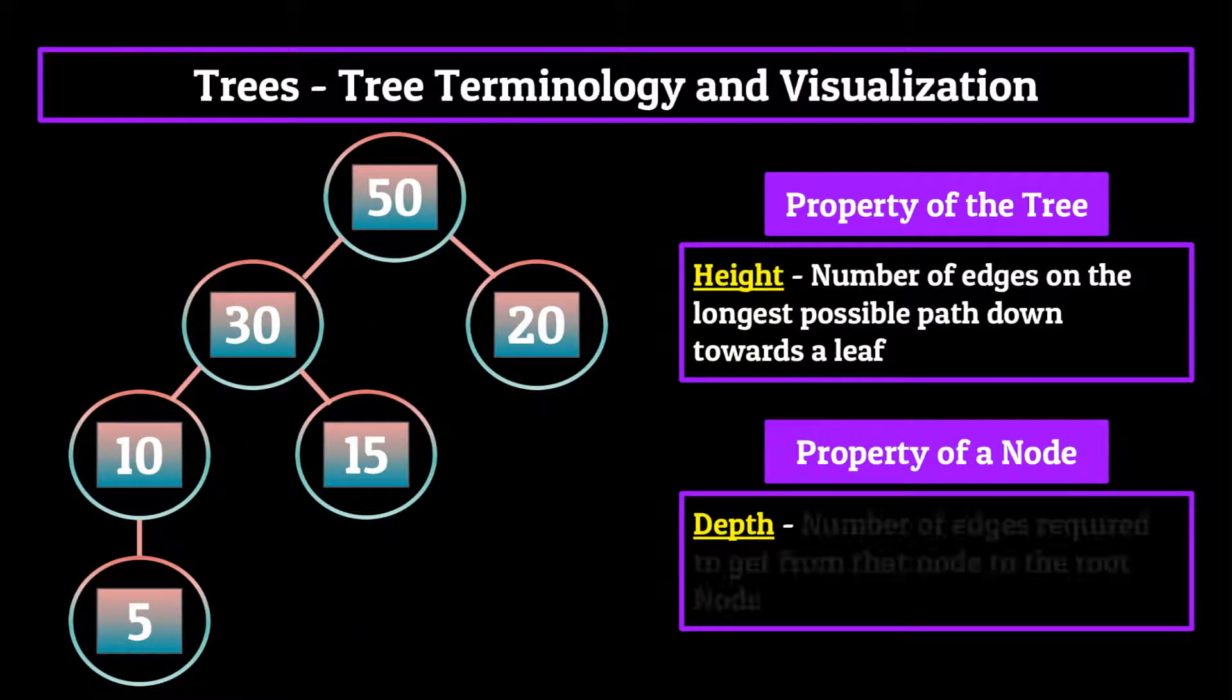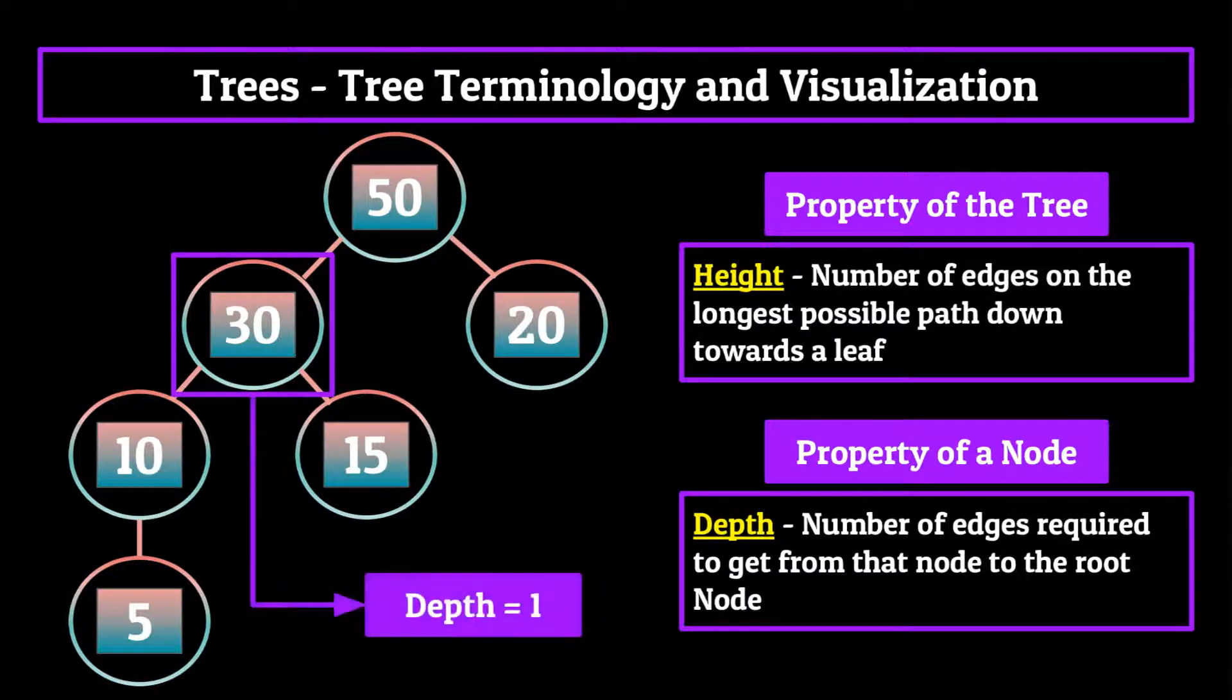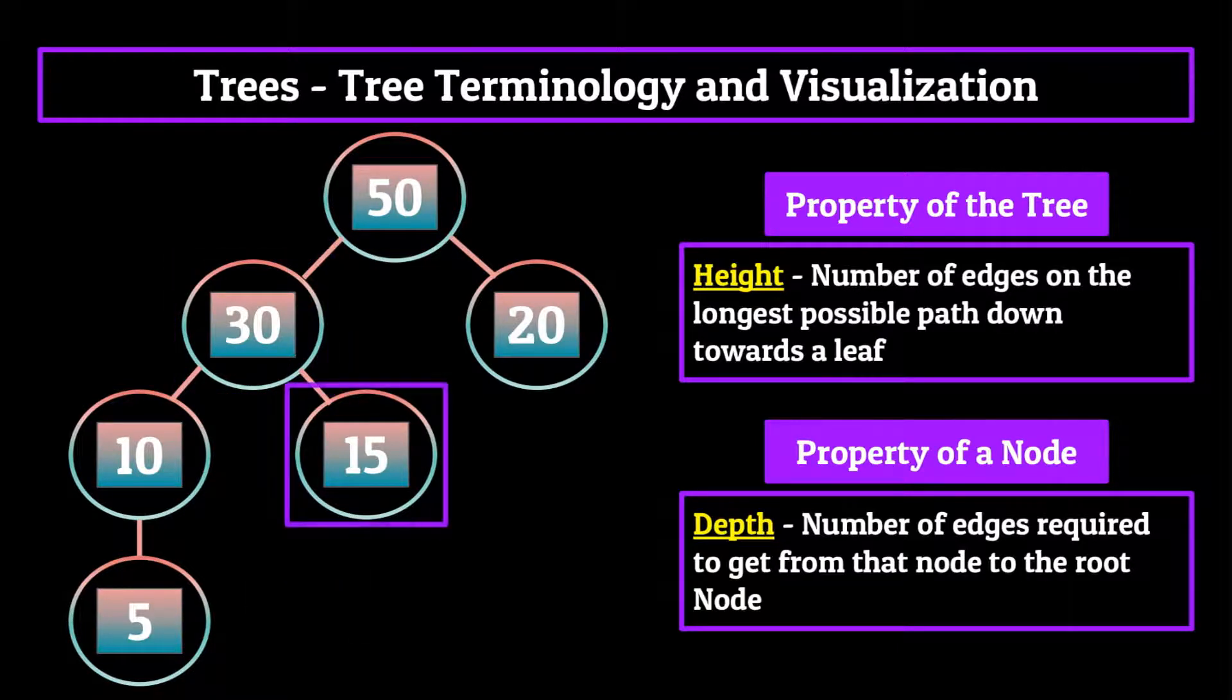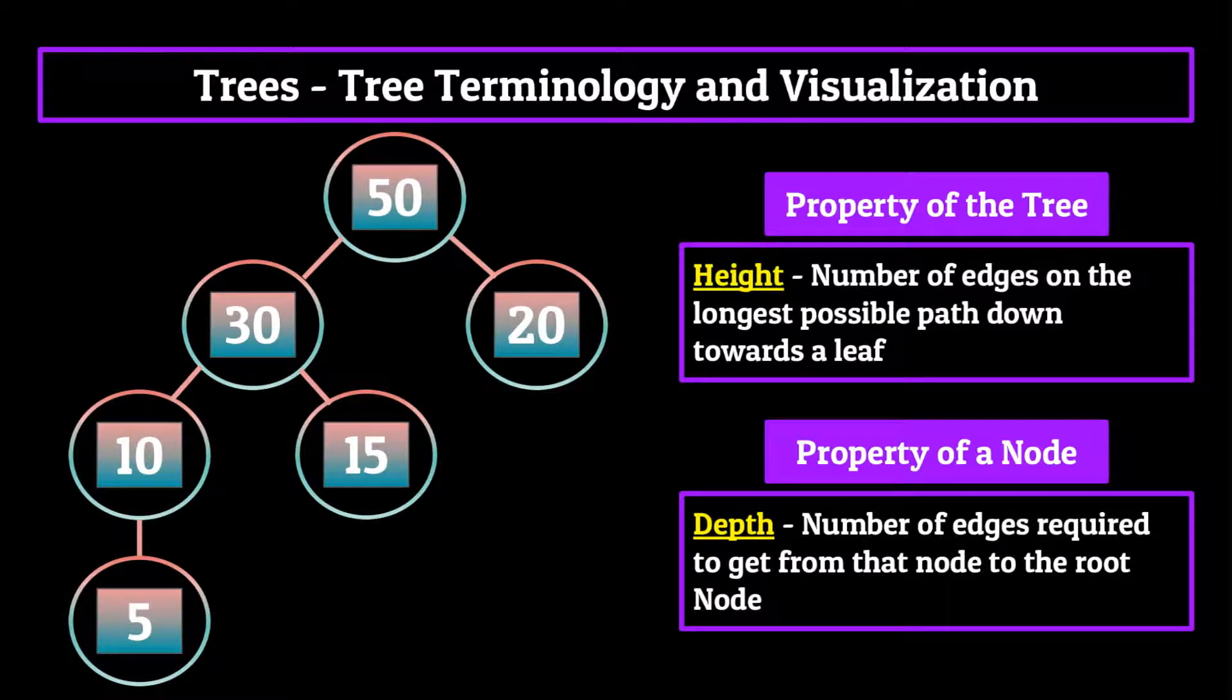Now the depth of a certain node is the number of edges required to get from that node to the root node. So, let's say for our 30 node, since there's only one edge connecting it on the way to the root node, its depth would be one. For the 15 node, however, since there are two edges which separate it from the root node, the 15 node would have a depth of two. And that is height and depth in a nutshell. Not too complicated, I hope.